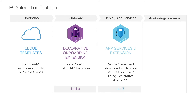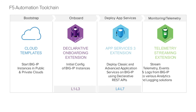AS3 simplifies deployment of BigIP's core value by abstracting away complexity and minimizing the need for BigIP domain knowledge. Finally, F5's Telemetry Streaming Extension uses the same simple declarative interface to aggregate, normalize, and forward statistics and events from BigIP to a consuming analytics application. This application can be another link in the toolchain, or a third-party tool, such as Splunk, Kafka, Graphite, and many more.